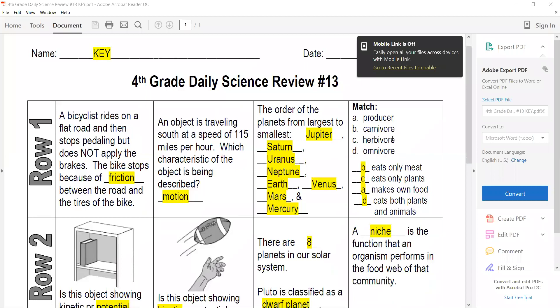A bicyclist rides on a flat road and then stops pedaling but does not apply the brakes. Because of friction, the bike will eventually stop. The friction between the tires and the road eventually causes the bike to come to a stop.